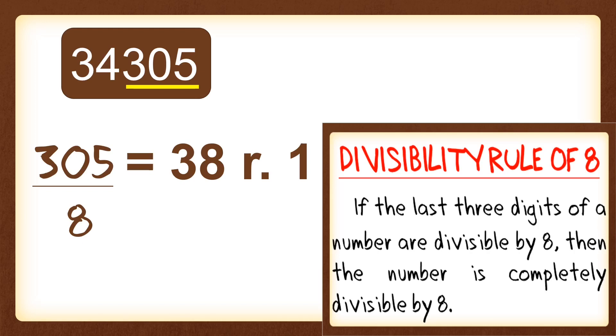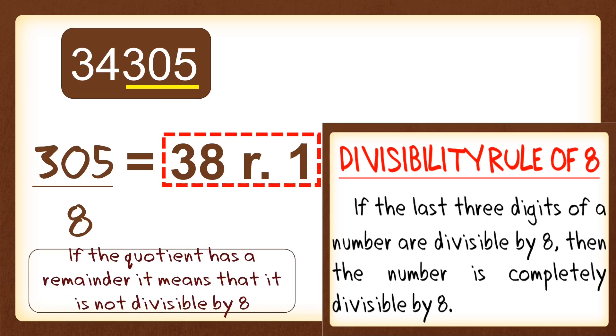And remember, if the quotient has a remainder, it means that it is not divisible by 8. So 34,305 is not divisible by 8.